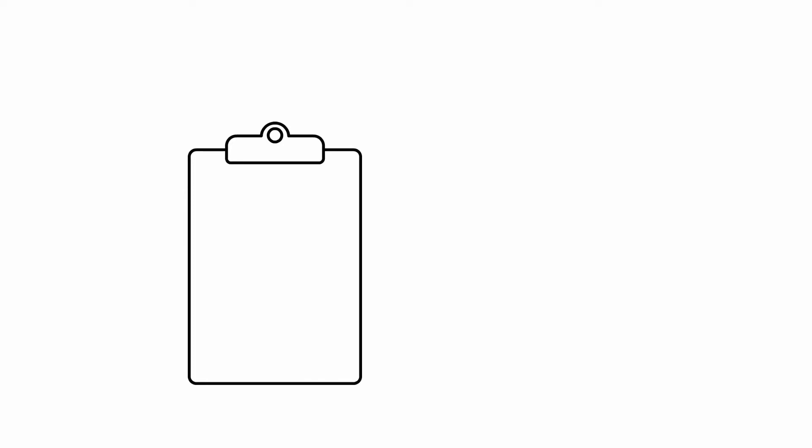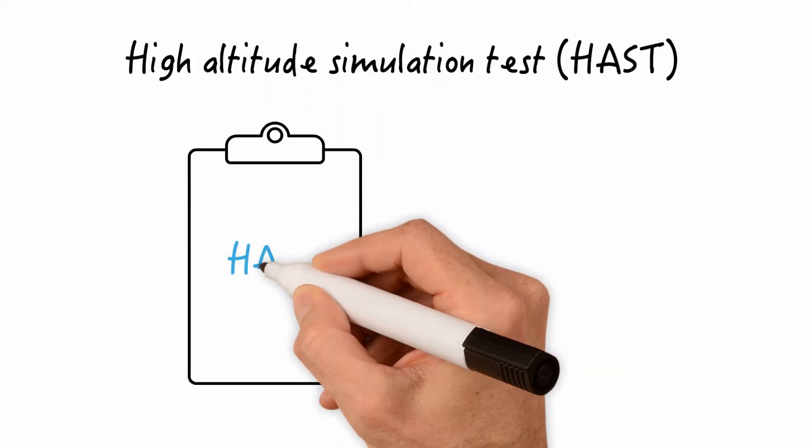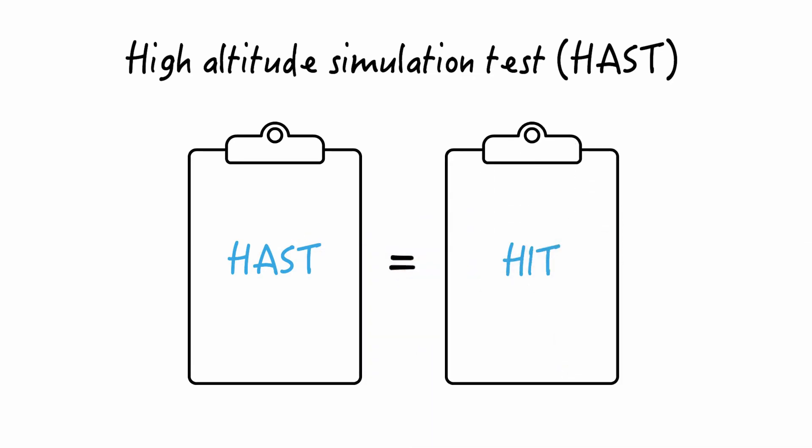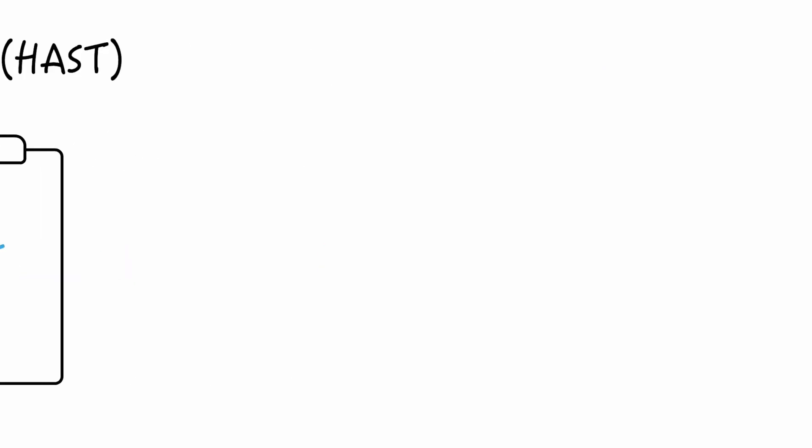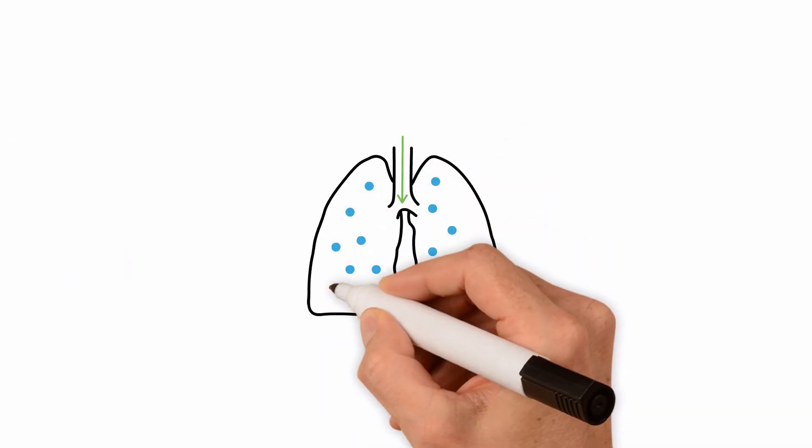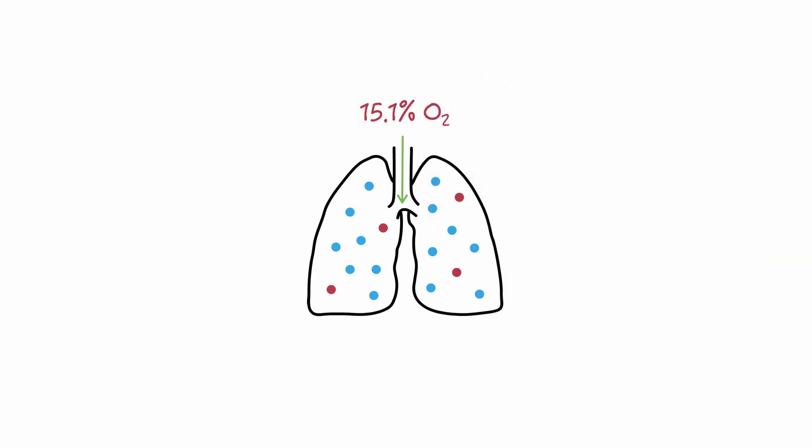The other approach, now offered in many pulmonary function laboratories, is the High Altitude Simulation Test or HAST, also known as the hypoxia inhalation test. The patient breathes a hypoxic gas mixture which contains 15.1 percent oxygen. This percentage of oxygen mimics the oxygen concentration in an airplane cabin pressurized to about 2400 meters above sea level.